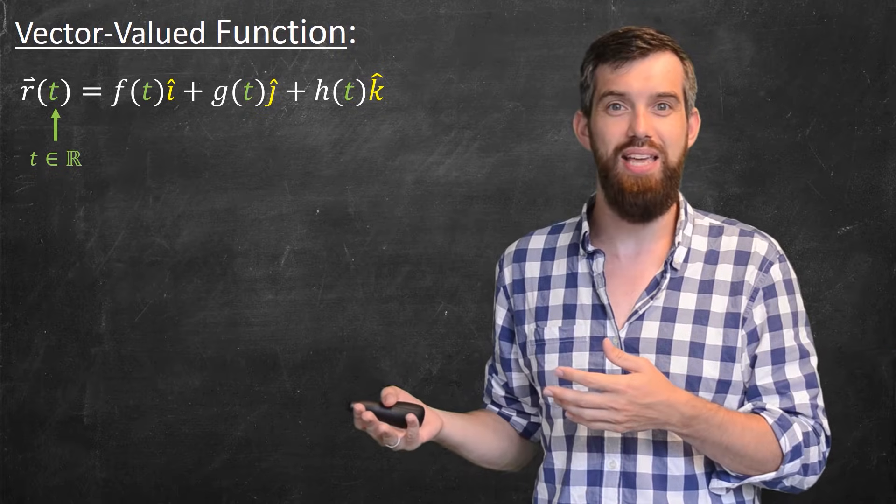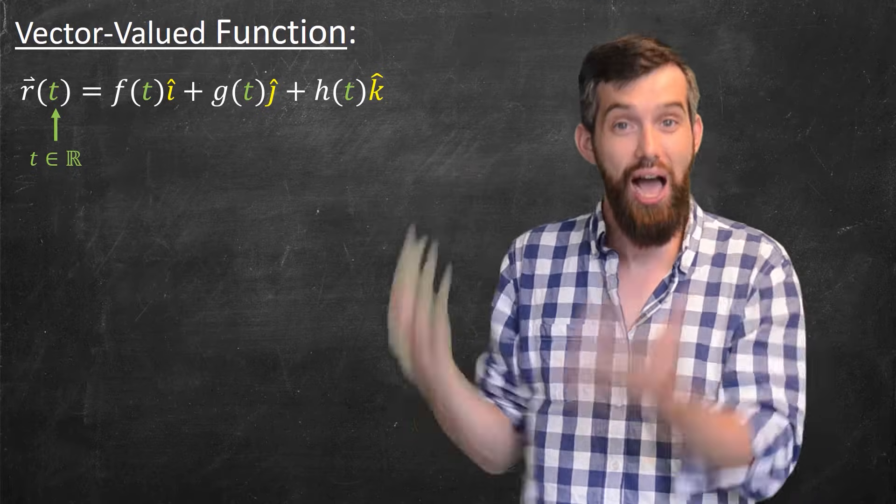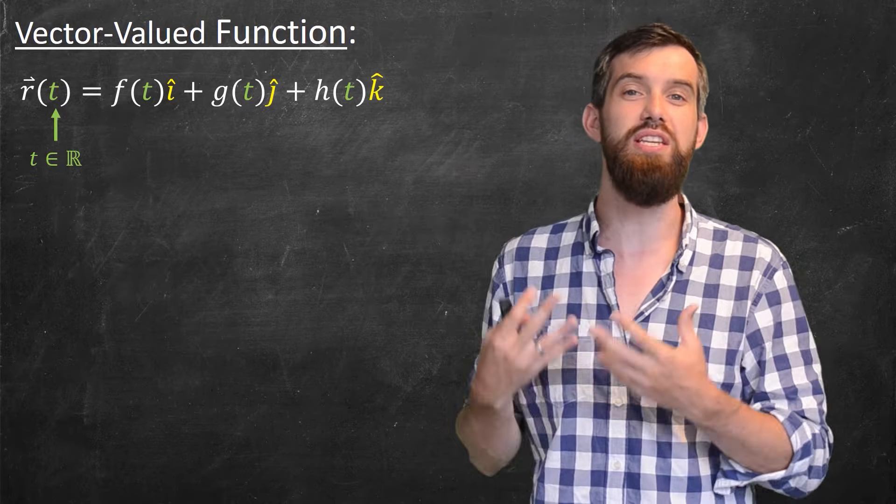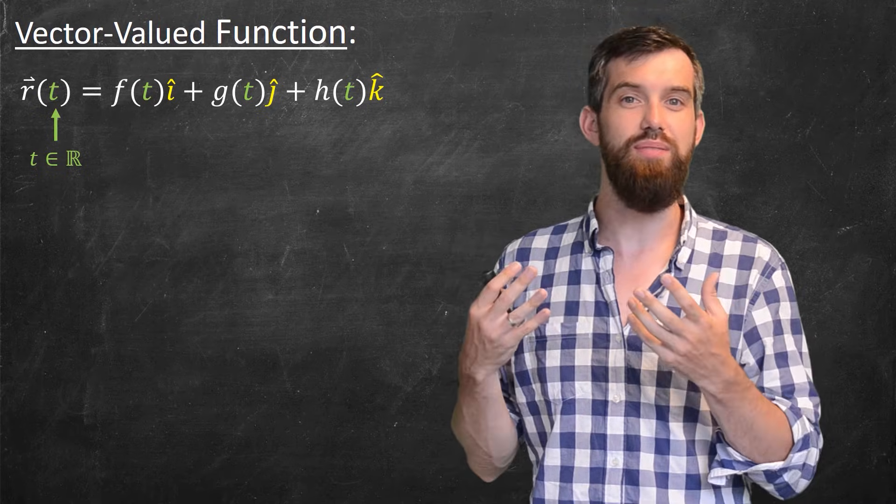But its output has an x, y, and z component. It's an f of t in the i-hat direction, a g of t in the j-hat direction, and an h of t in the k-hat direction.